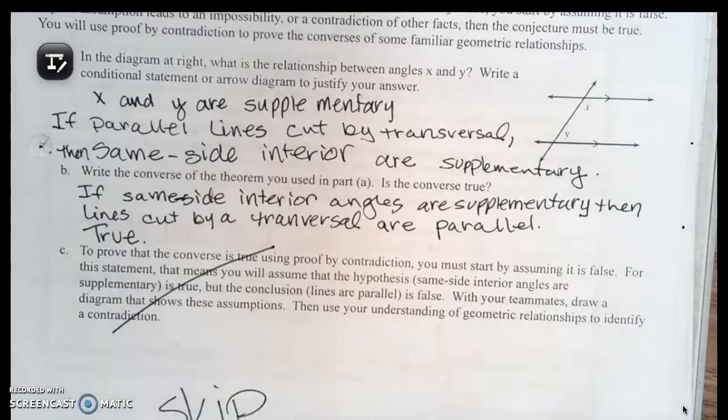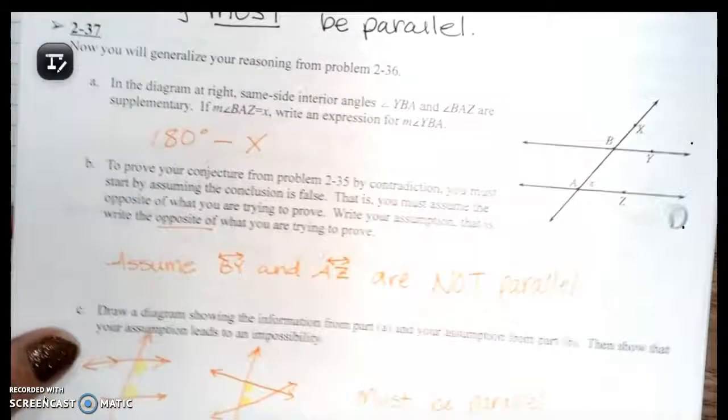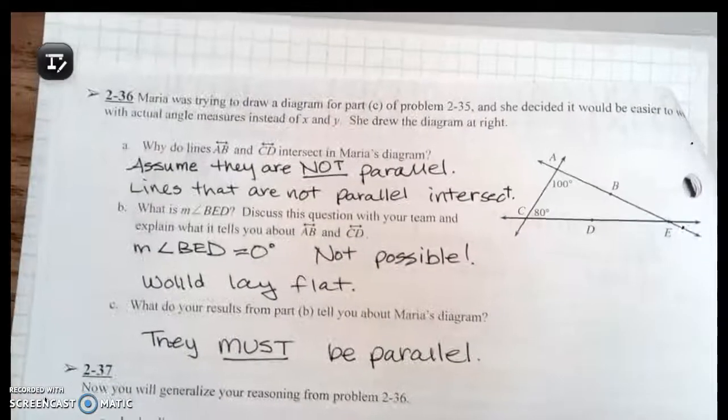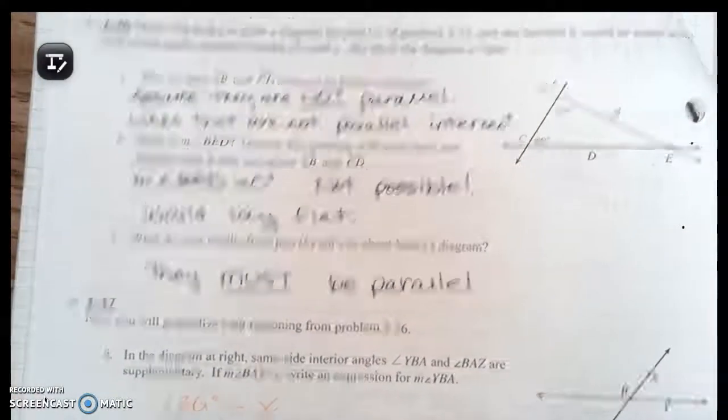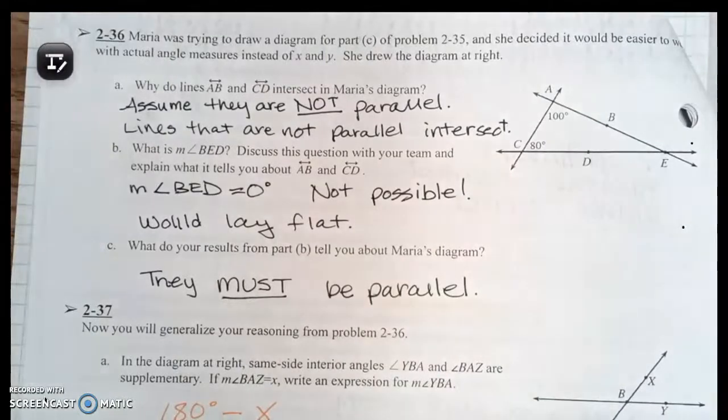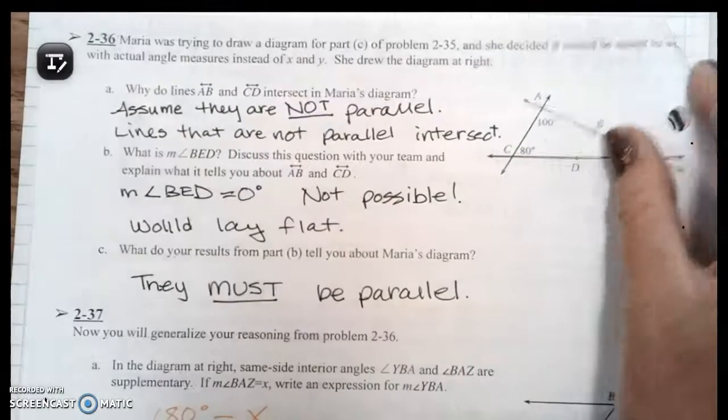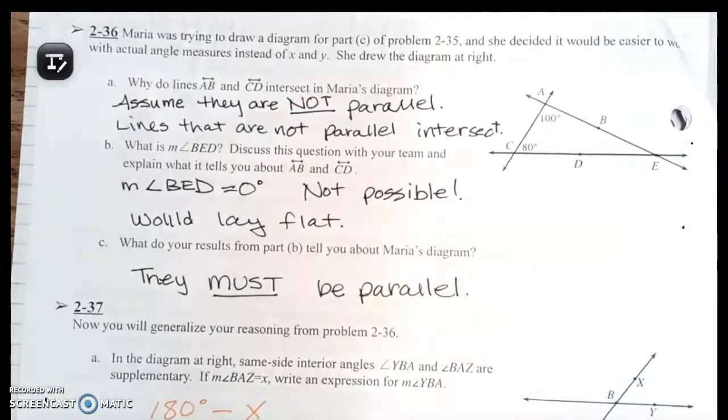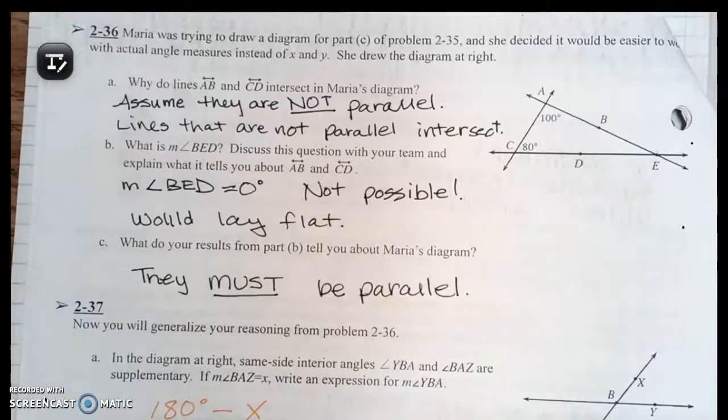At the top of page 10 we have question 36. Maria was trying to draw a diagram for part C of problem 35, and she decided it would be easier to work with an actual angle measure instead of x and y.